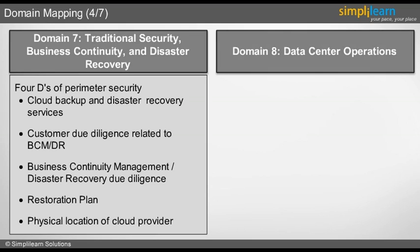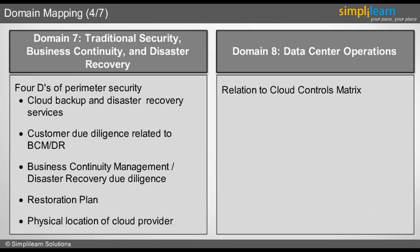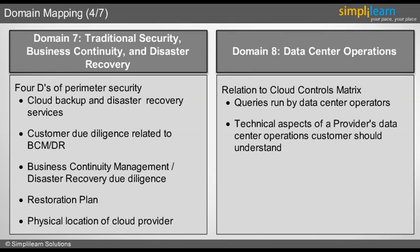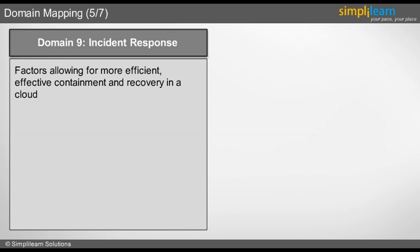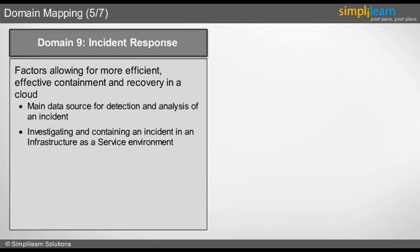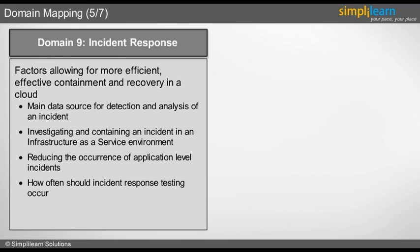Domain 8: Data Center Operations. In this domain we will look into the relation to cloud controls matrix, queries run by data center operators, technical aspects of a provider's data center operations that customers should understand, and logging and report generation in multi-site clouds. Domain 9: Incident Response. Here we will learn about the factors allowing for more efficient and effective containment and recovery in a cloud, main data sources for detection and analysis of an incident, investigating and containing an incident in an IaaS environment, reducing application-level incidents, how often incident response testing should occur, and offline analysis of potential incidents.